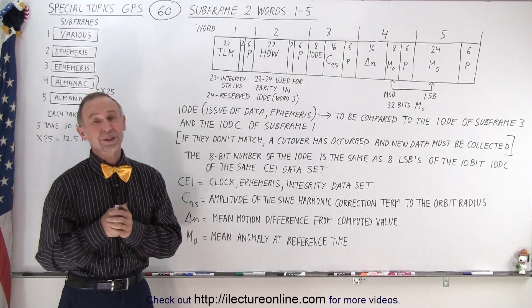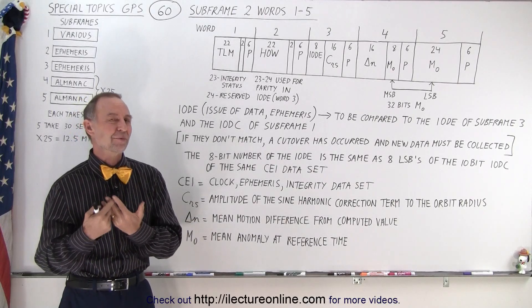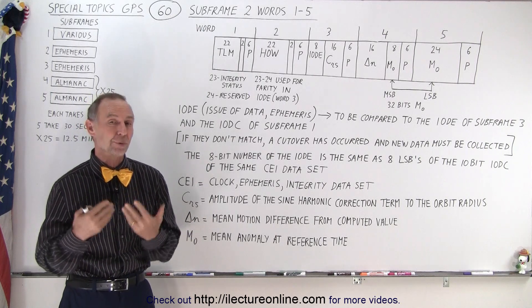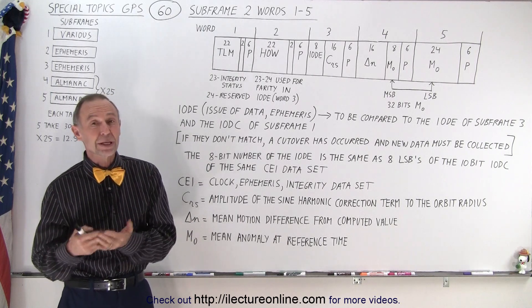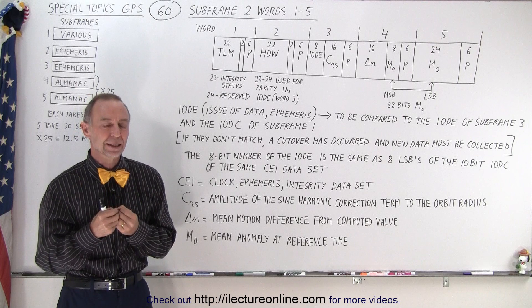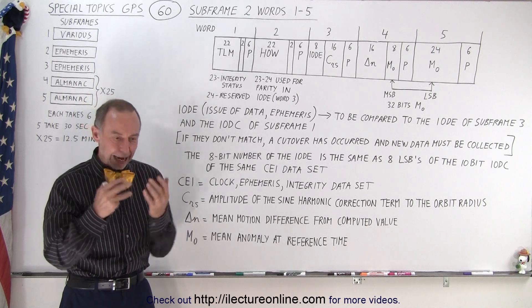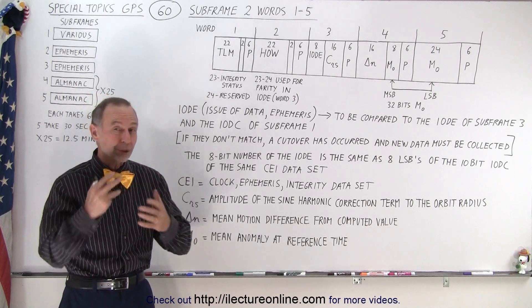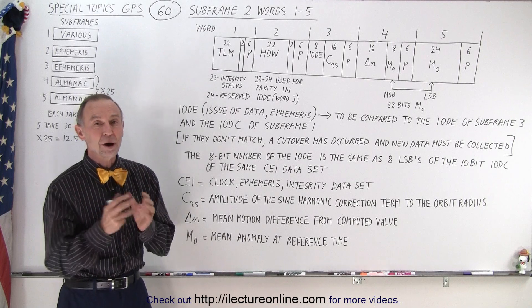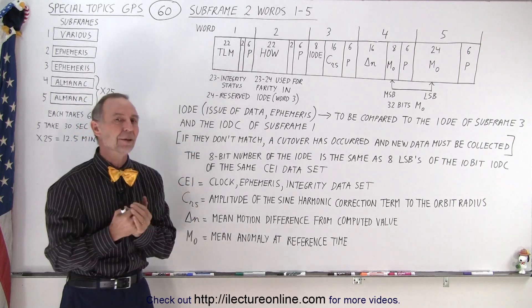Welcome to our lecture online. We're now ready to start talking about subframe 2 and subframe 3. Subframe 2 and 3 contain the ephemeris data. This is the very accurate data, orbital data, orbital parameters of the SV that is sending the message.